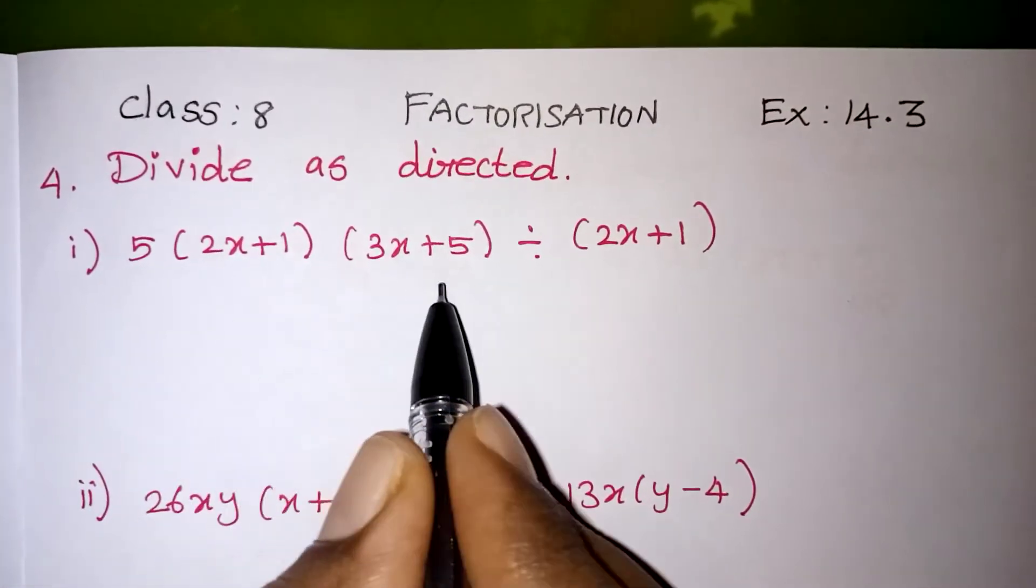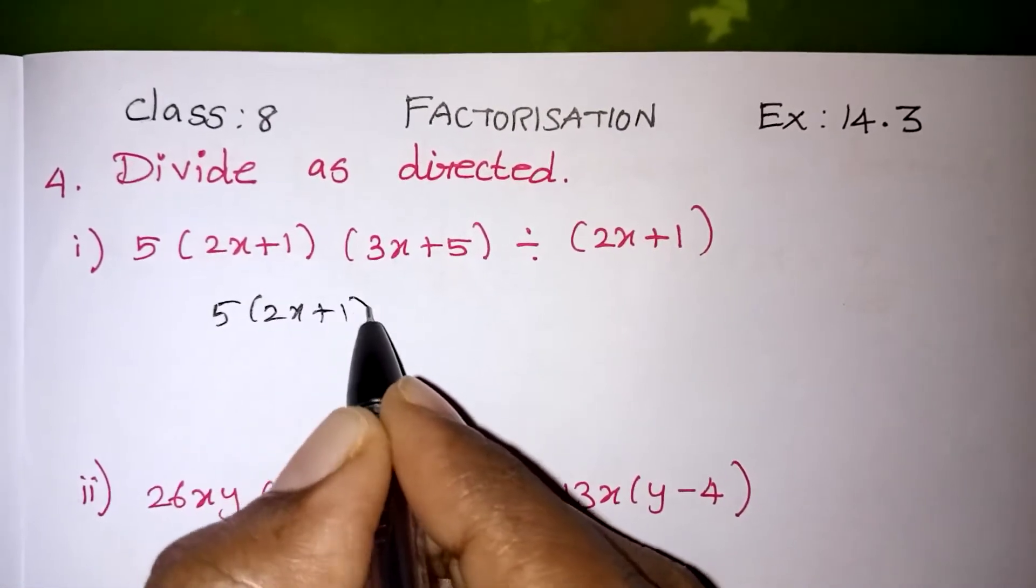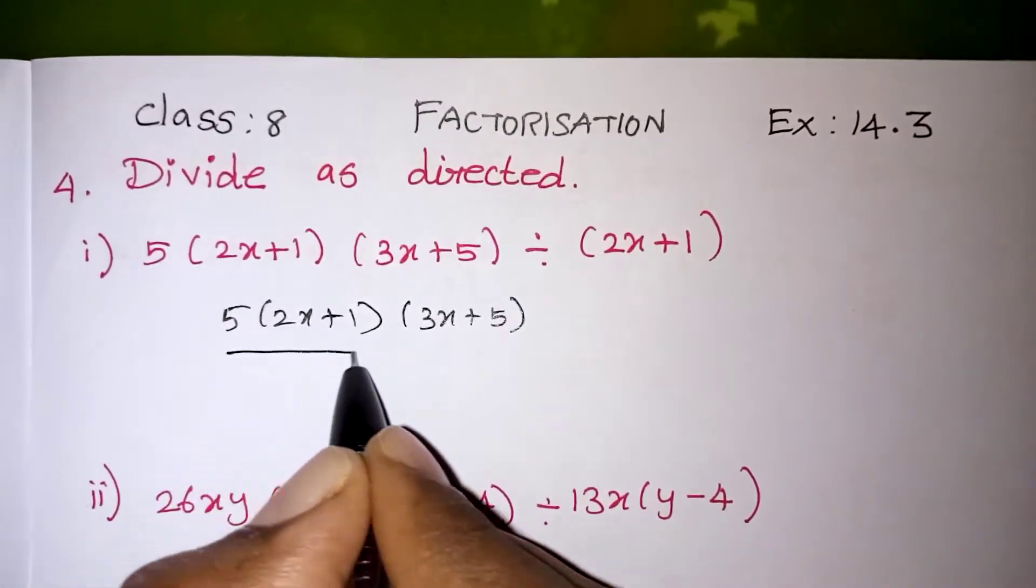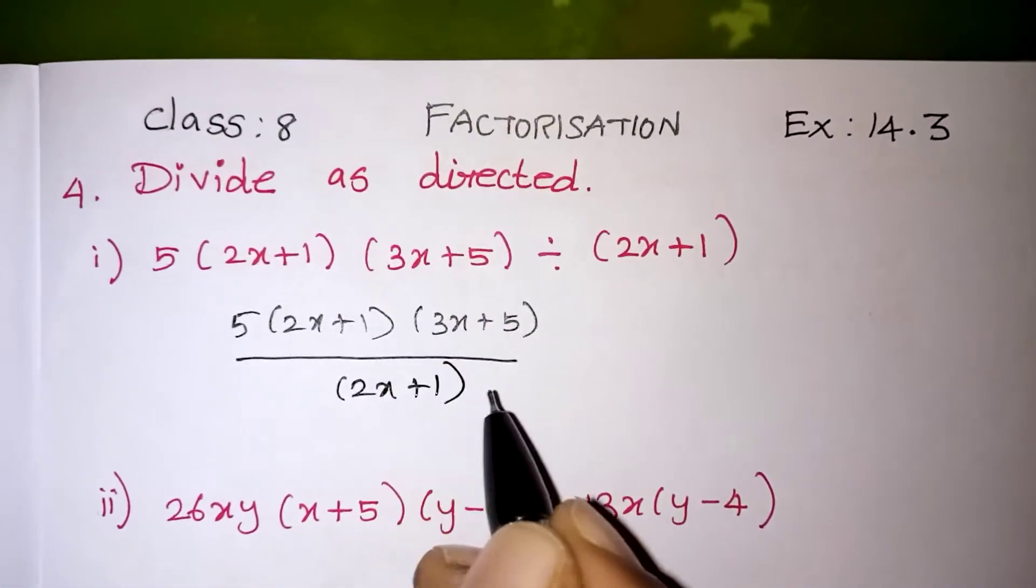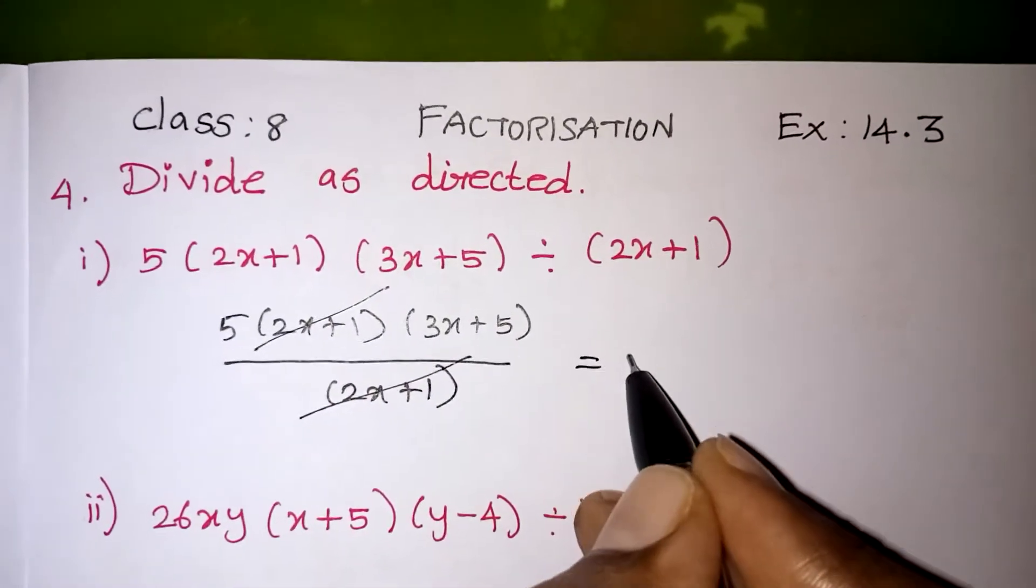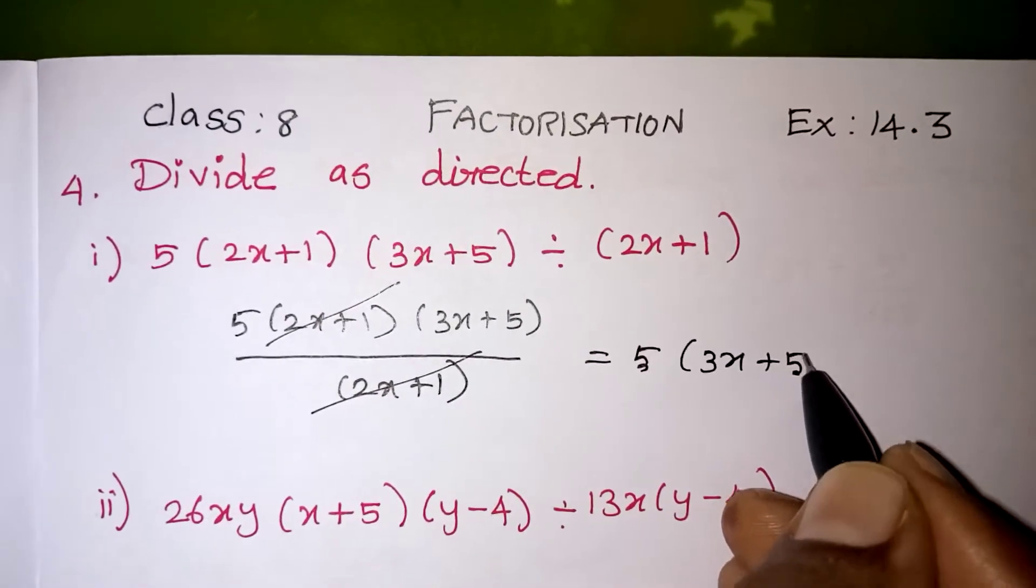Always the first number should be taken as a numerator, that is 5(2x + 1)(3x + 5) is a numerator and the denominator is the second term, that is (2x + 1). Direct division only, we can cancel this (2x + 1) and this (2x + 1), so the remaining answer is 5(3x + 5), that is your answer.